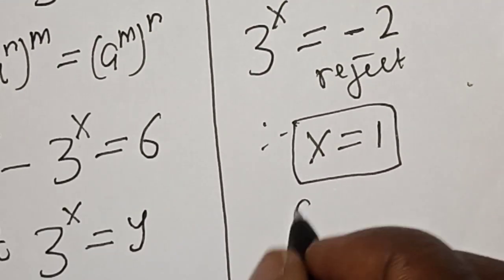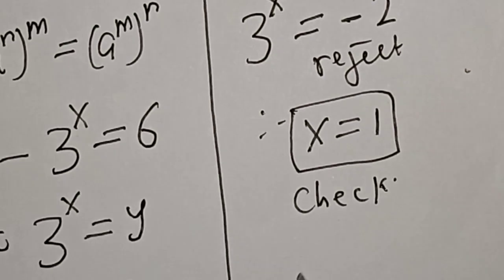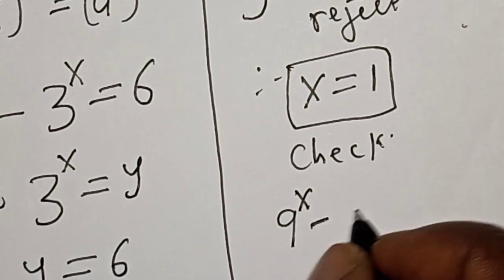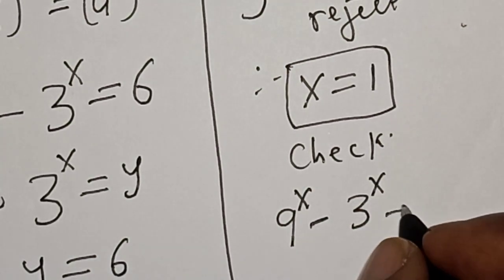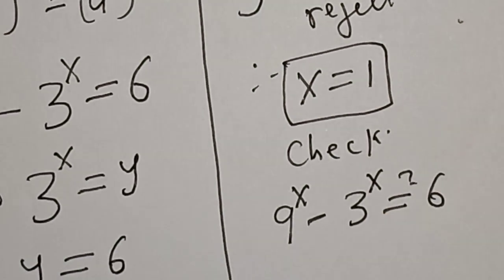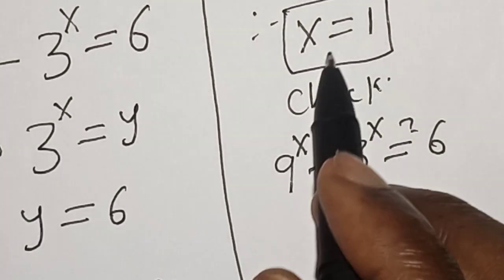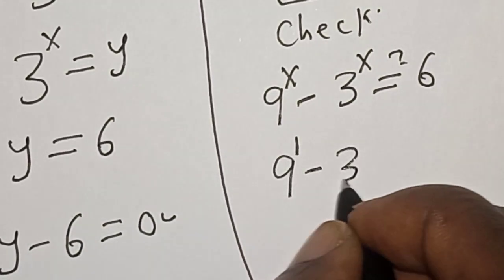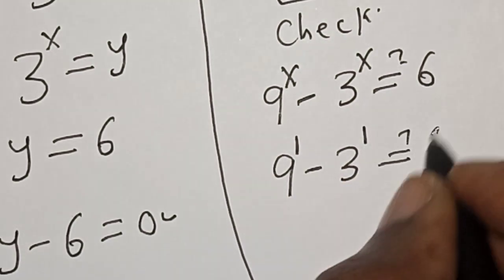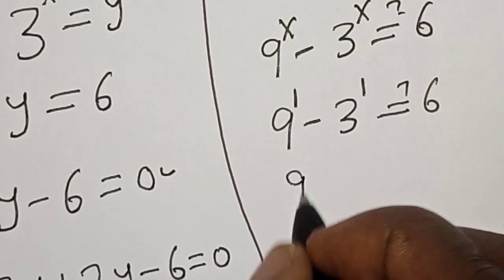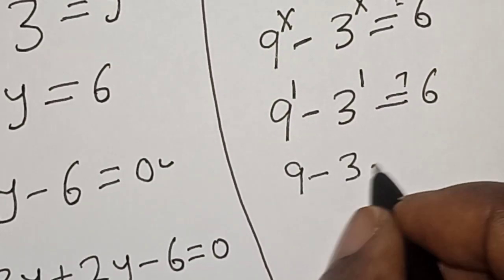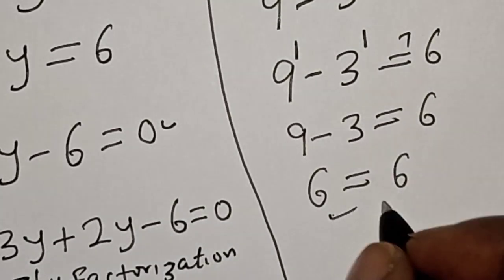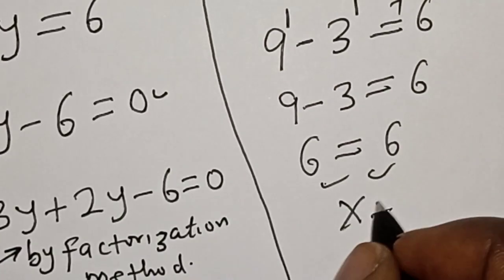Let's check to confirm if our answer is right. We have the given equation: 9 raised to power s minus 3 raised to power s must equal 6. At s equals 1, this becomes 9 raised to power 1 minus 3 raised to power 1, which is 9 minus 3, equals 6. The left hand side equals the right hand side, so we satisfy the given equation at s equals 1.